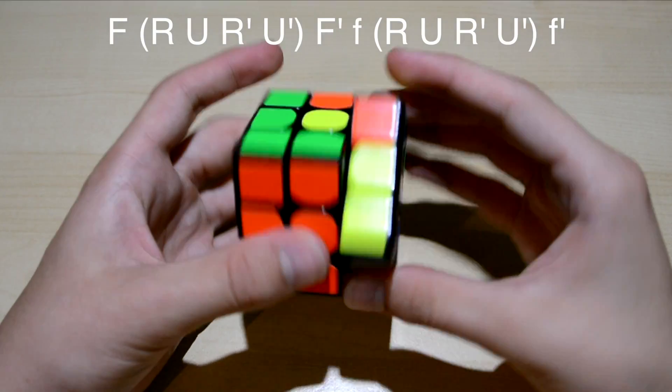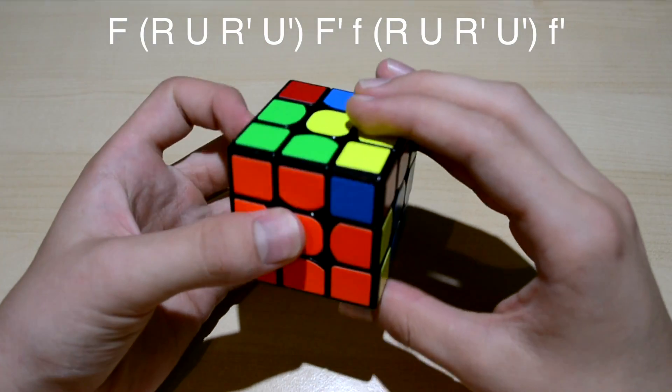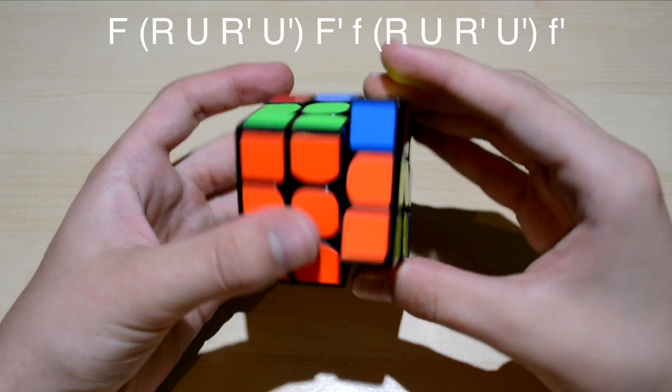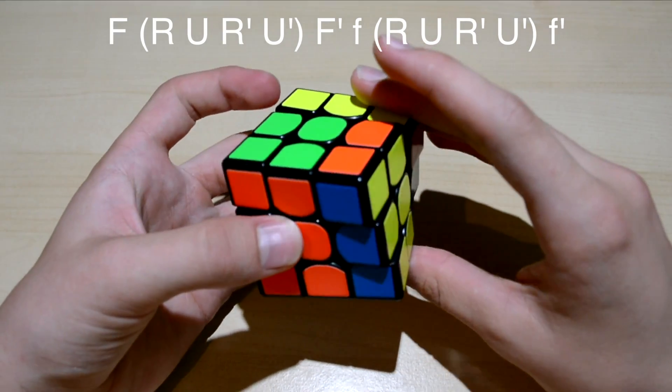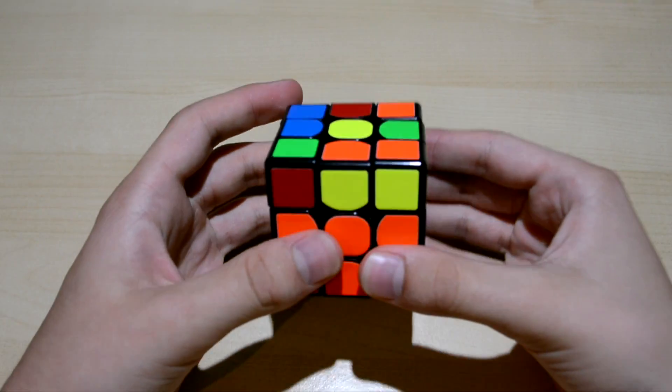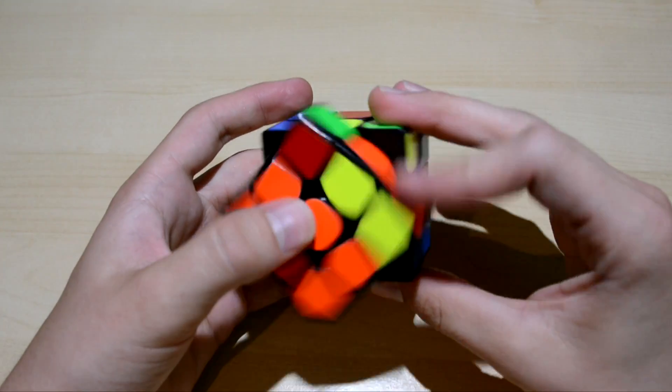So this is F, R, U, R prime, U prime, F prime, fat F, R, U, R prime, U prime, fat F prime.